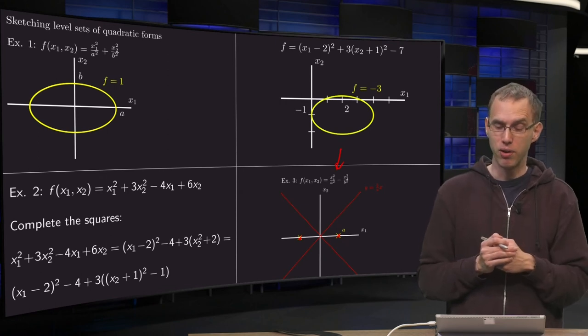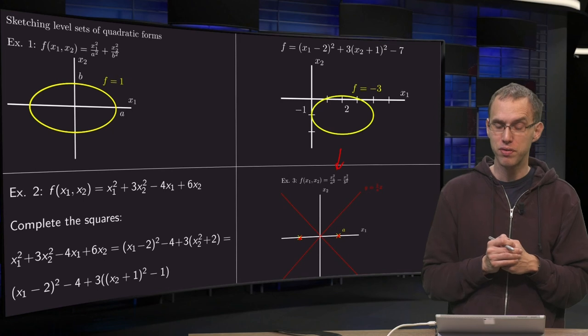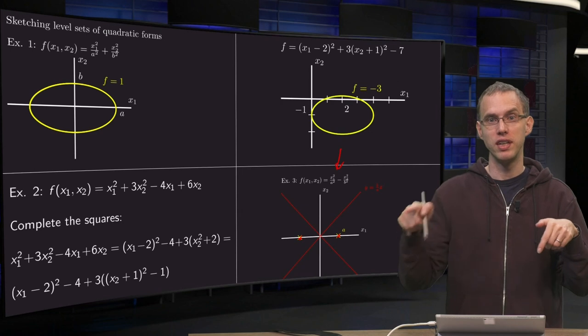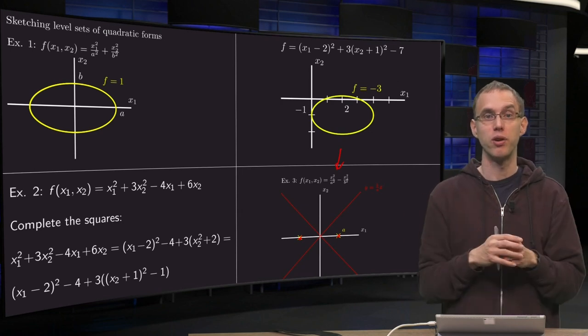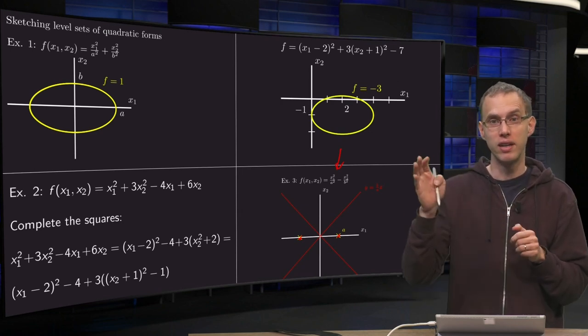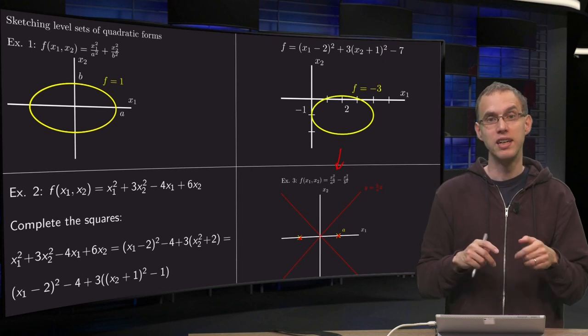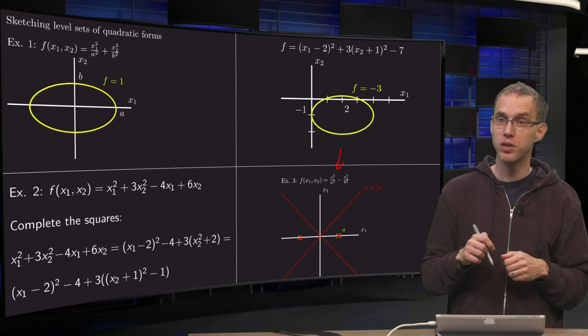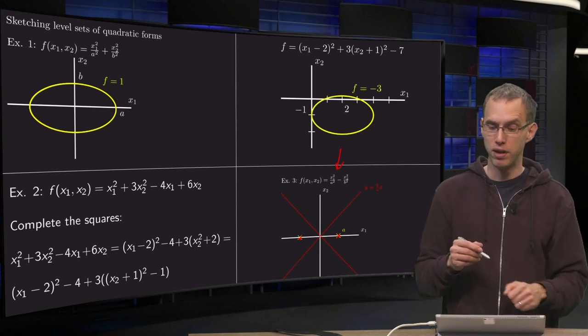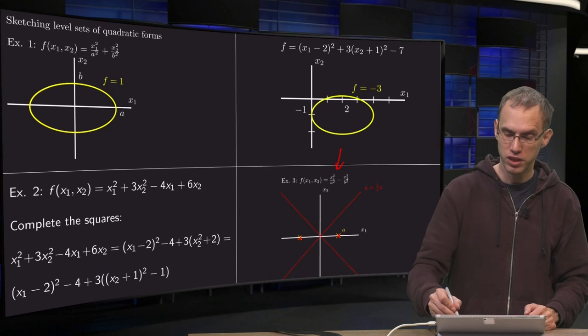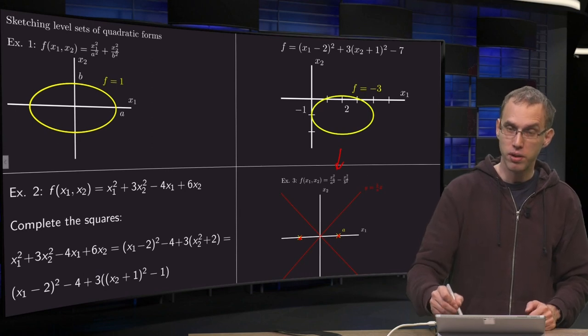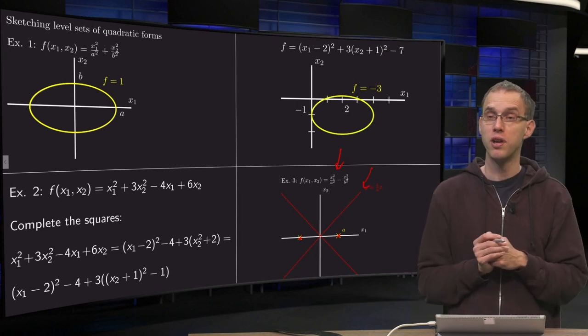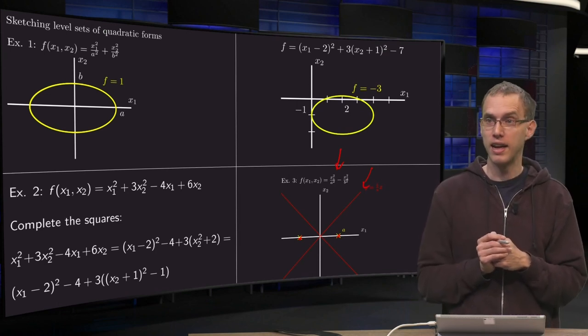Now we can look what happens for big values of x1 and x2. Well, if you have x1 squared over a squared minus x2 squared over b squared equals 1, and if your x1 and x2 are going to be very big, then you can neglect the 1, basically. So you get x1 squared over a squared equals x2 squared over b squared, or a line of y equals b over a times x, which is sketched over here. So in the limit you will go towards this line over here for very large values of x1 and x2.